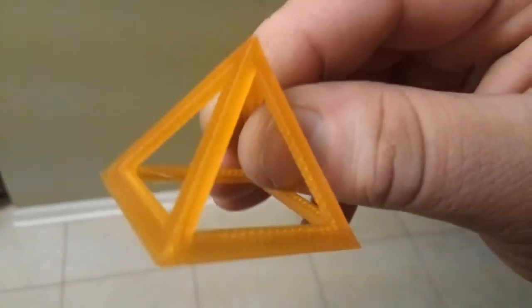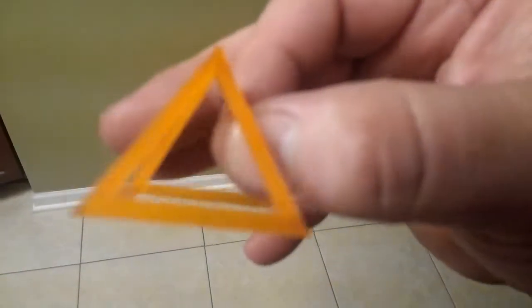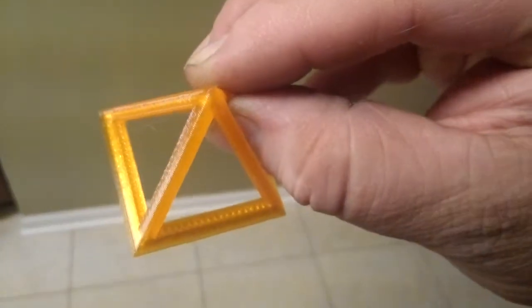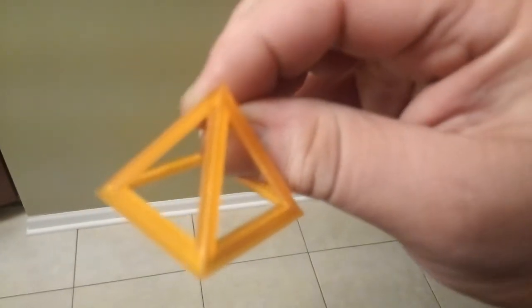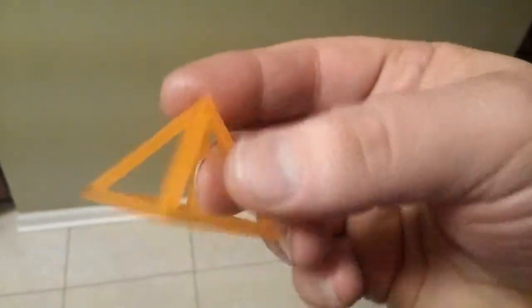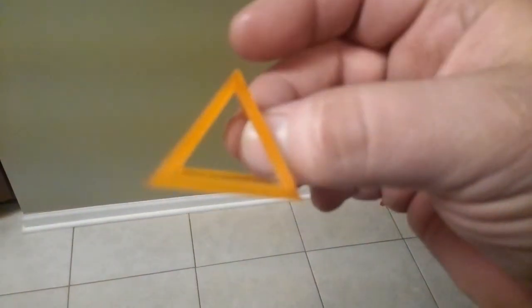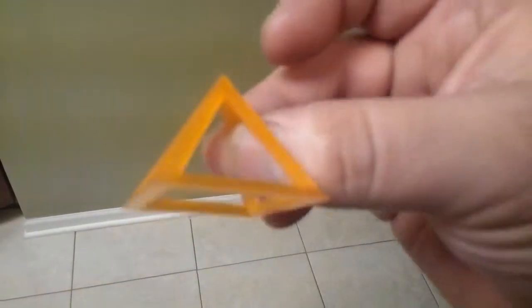That's 0.3 millimeter layer, hollow infill, two perimeters. And I think it only took about 15 minutes or so. It slows down at the end.